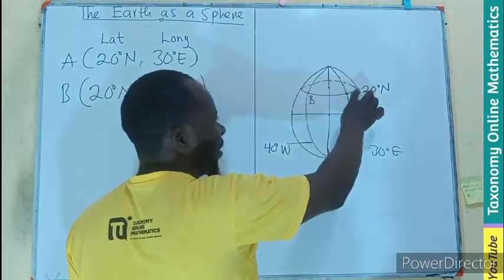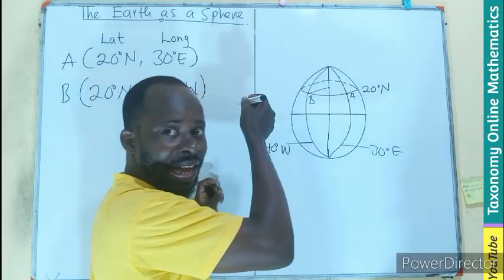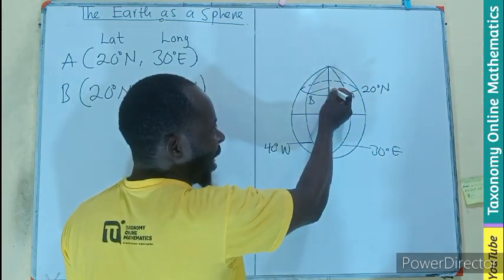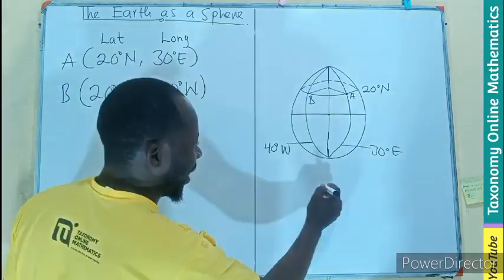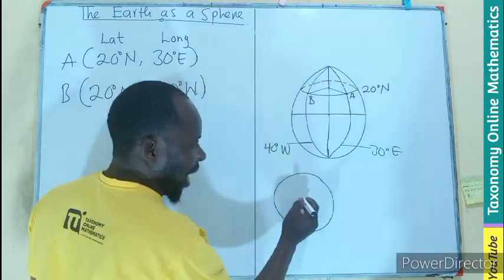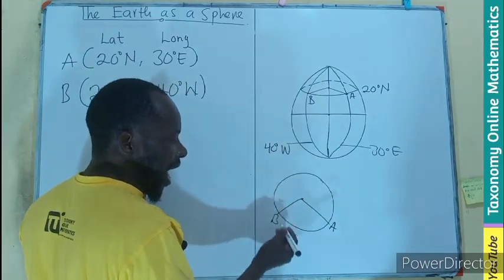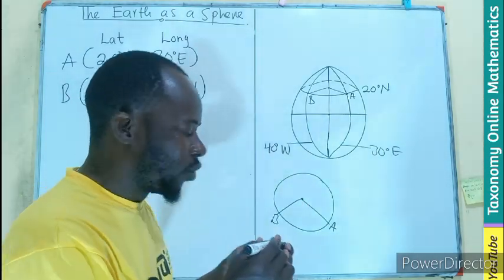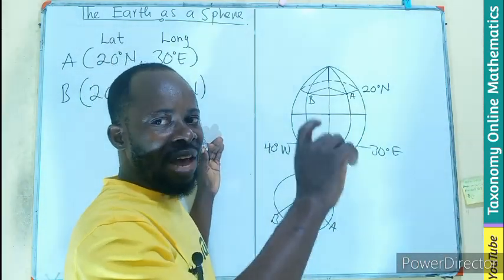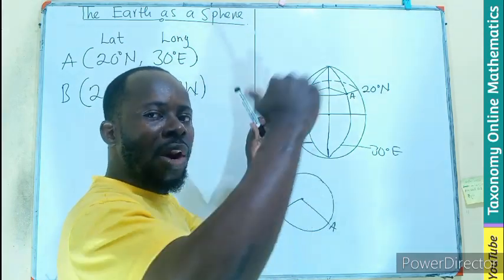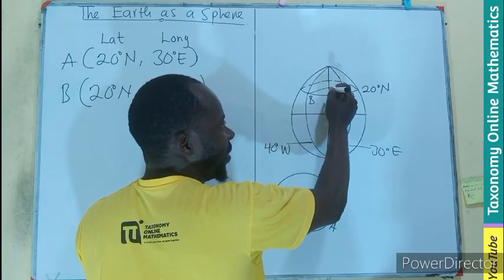You can see this is a representation of the position of A and B on the circle, on the surface of the Earth. So, if we are taking the whole of this as a circle, then the line from B to the center of that circle will be a radius. From the center to A will also be a radius. So, I can pick it out as a circle, having the center to B, center to A.